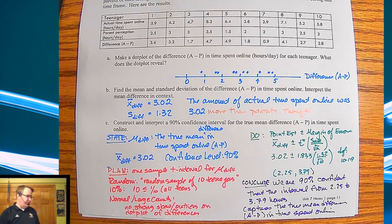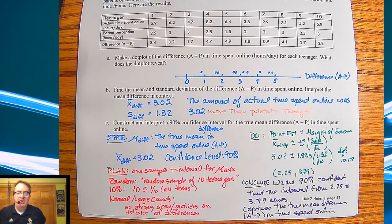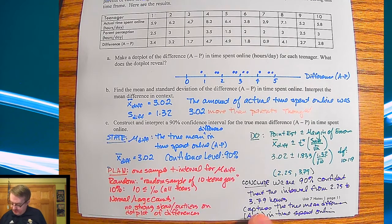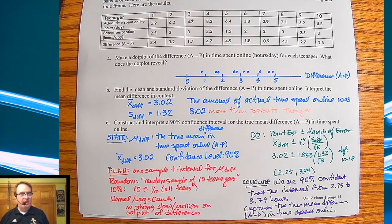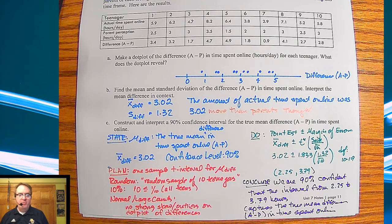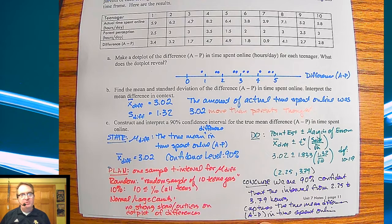Our conclusion is: we are 90% confident that the interval from 2.25 to 3.79 hours captures the true mean difference — A minus P, actual minus perceived — in time spent online.